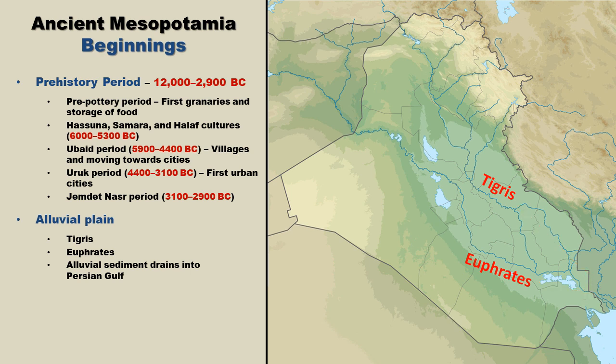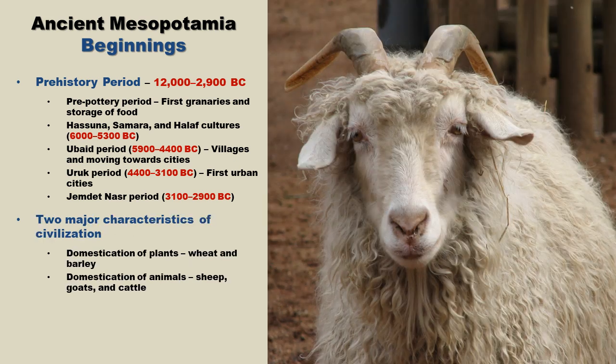There are two main characteristics of these early civilizations. First is the domestication of plant species — the two main species involved were grasses, specifically wheat and barley. The second characteristic is the herding and domestication of animals. The three most significant early domesticated animals were sheep, goats, and cattle.